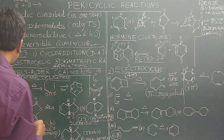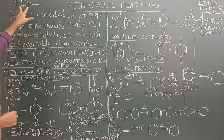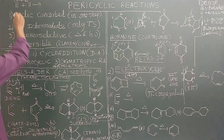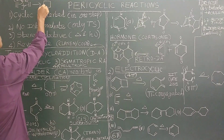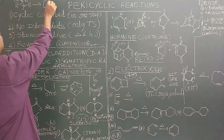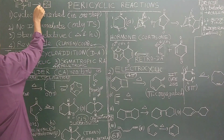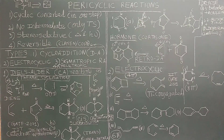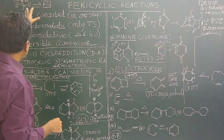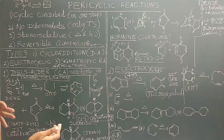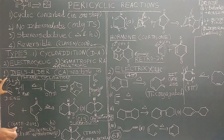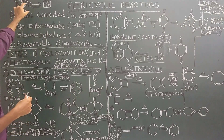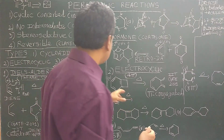Similarly, you have 4+2 cycloaddition; you can also have 2+2 addition. For example, 2+2 gives cyclobutane, which on heating gives back two molecules of ethylene. So this is 2+2 type, this is 4+2 type, and 6+4 type. There are several types of cycloaddition reactions depending on how many pi-electrons are involved.